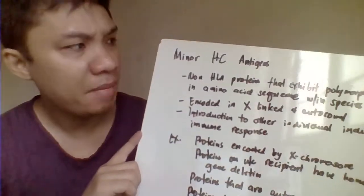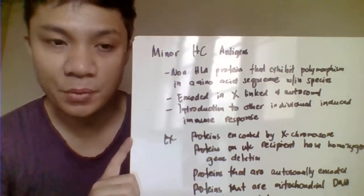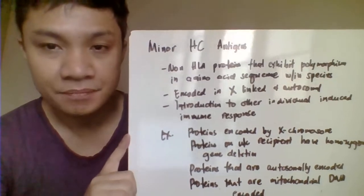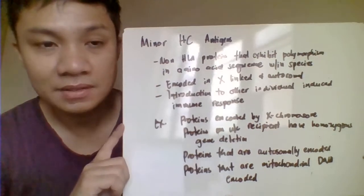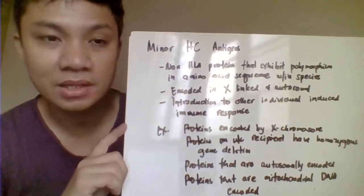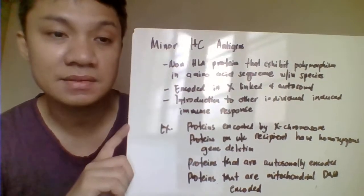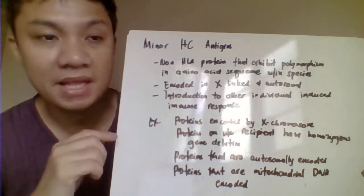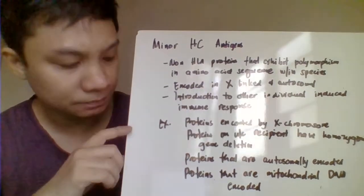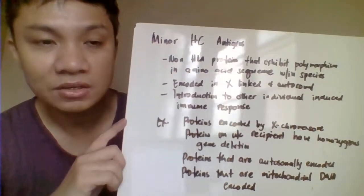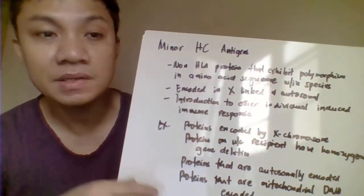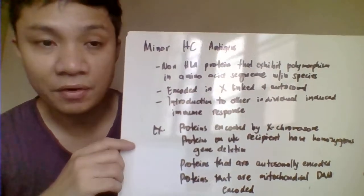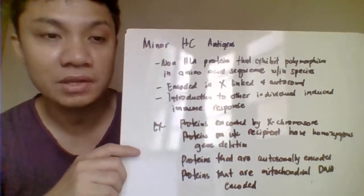Next we have the minor histocompatibility antigens. These are non-HLA proteins that exhibit polymorphism in amino acid sequence. Most likely, this is encoded on the X-linked or autosomal chromosomes. Although minor histocompatibility complex has only a minor effect on transplantation, it can still contribute to the rejection process, especially if the donor and recipient are not compatible. The rejection process from minor histocompatibility incompatibility occurs at a slower pace compared to major histocompatibility complex incompatibility.